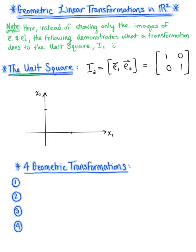Graphically, this identity matrix looks like the unit square. Here is our first elementary vector e sub 1, the vector with components 1, 0, and here is our second elementary vector e sub 2, with components 0, 1. We can use these elementary vectors to create the unit square. We are going to be focusing on four geometric transformations of this square.